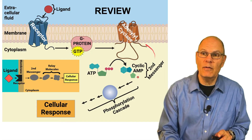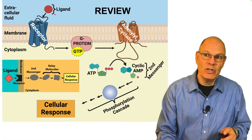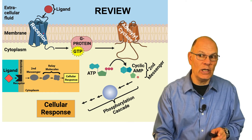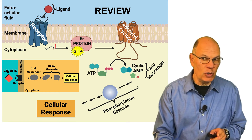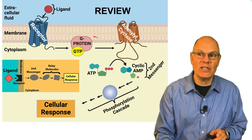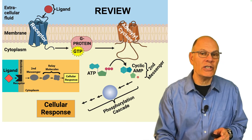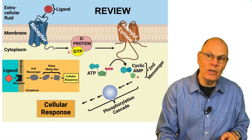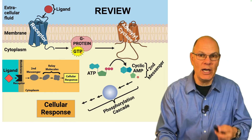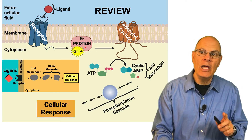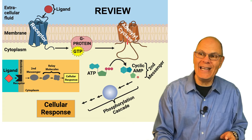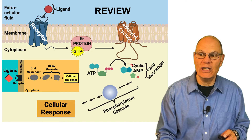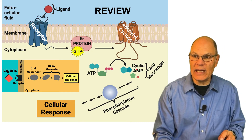Let's review what we've talked about so far. Reception: the ligand, epinephrine, binds with the G-protein-coupled receptor. The receptor changes shape on its cytoplasmic side and interacts with the G protein, causing it to discharge GDP — what it's bound to when dormant — and bind with GTP, what it binds with when active. The G protein then in turn activates adenylyl cyclase, which takes its substrate ATP and converts it into cyclic AMP, the second messenger.